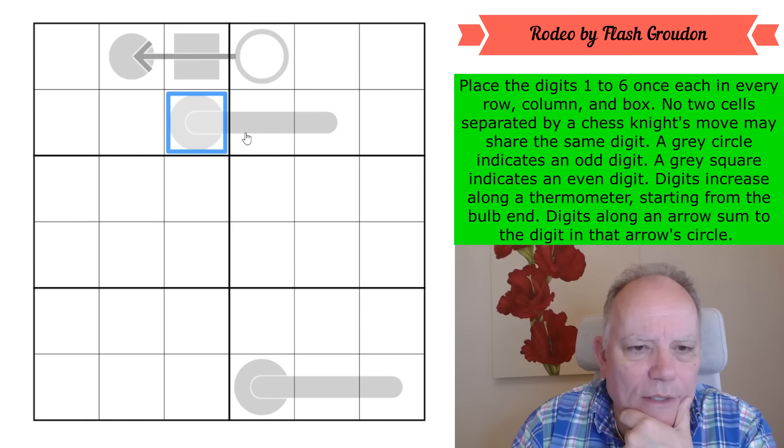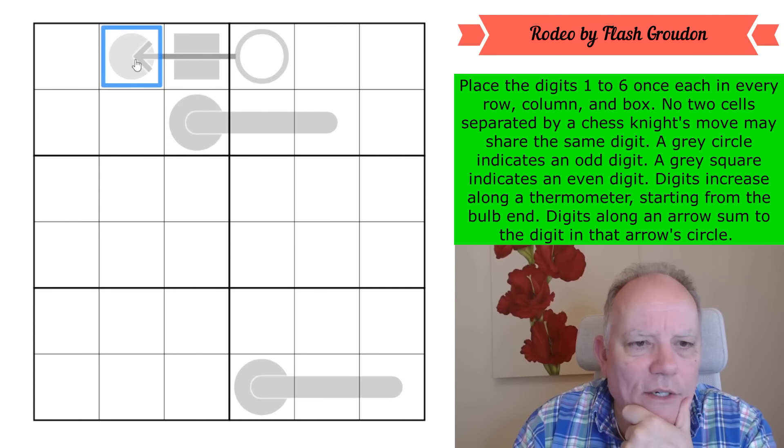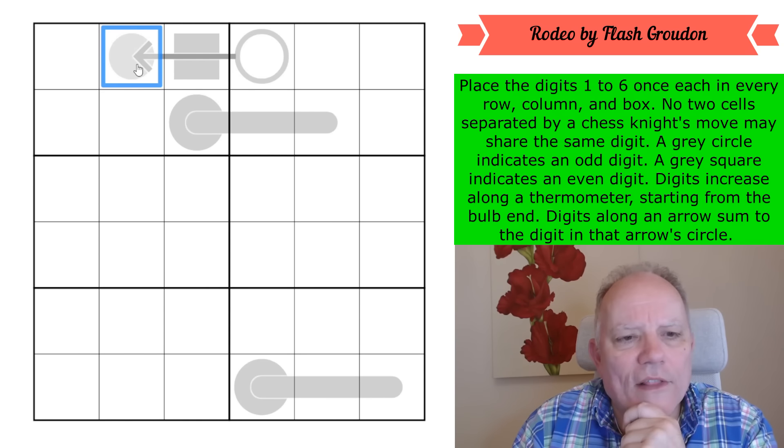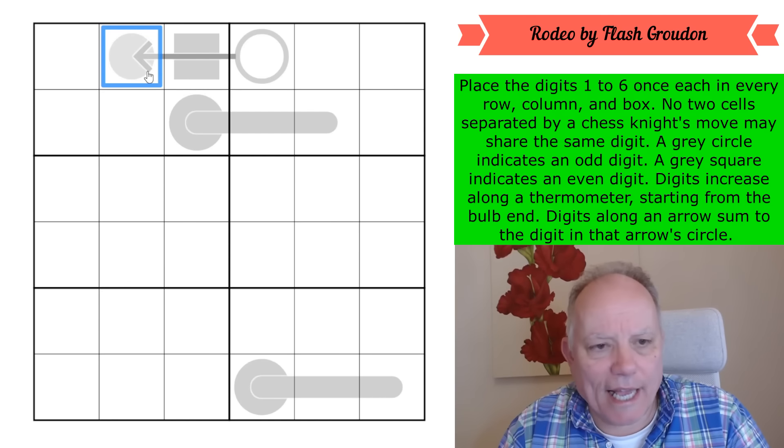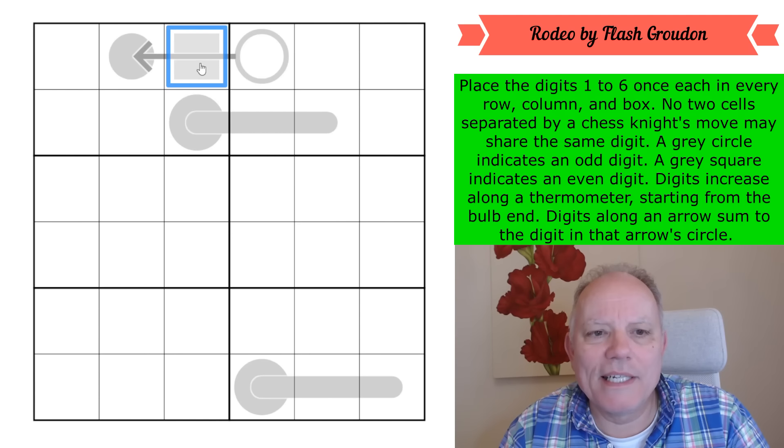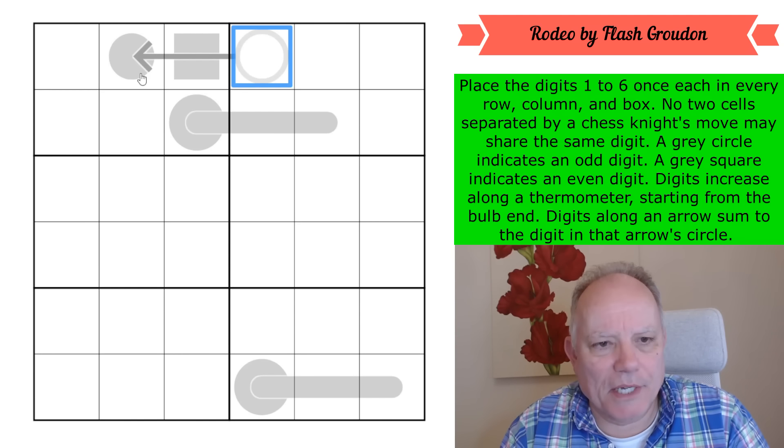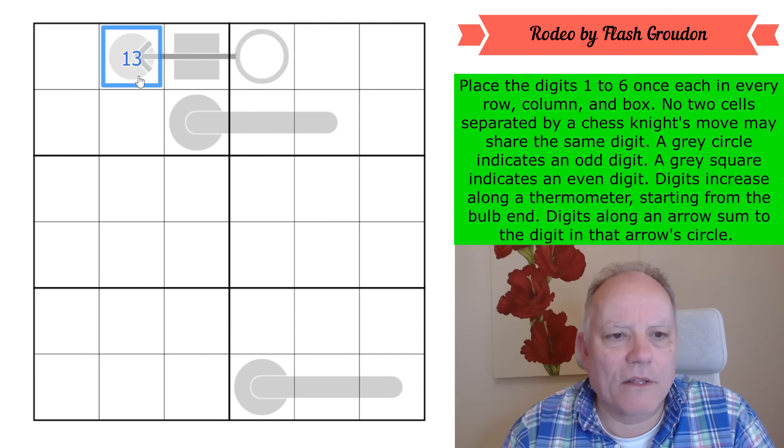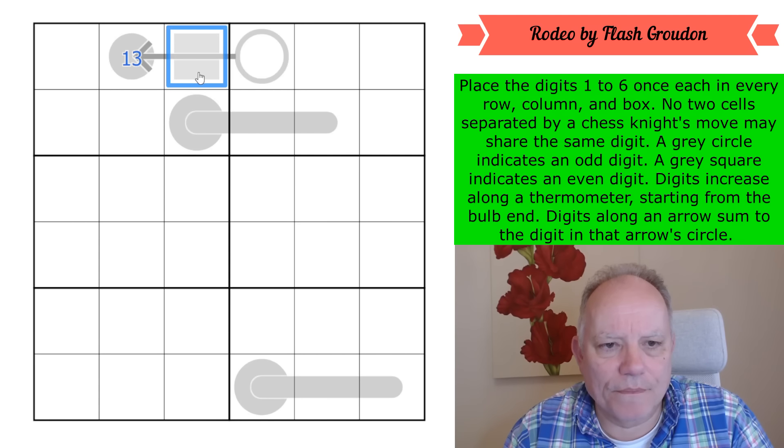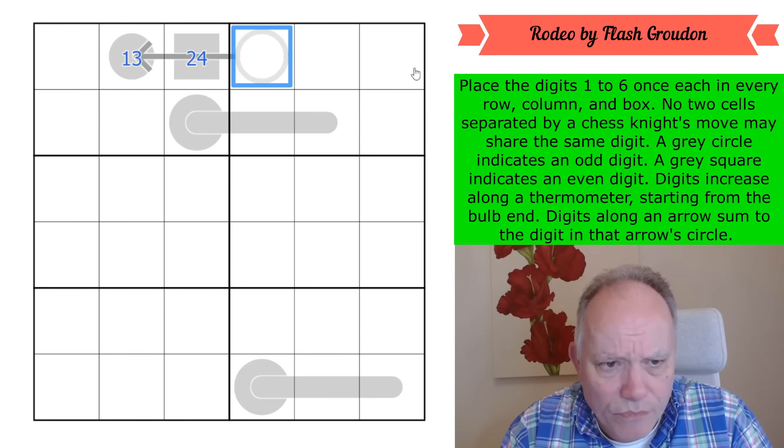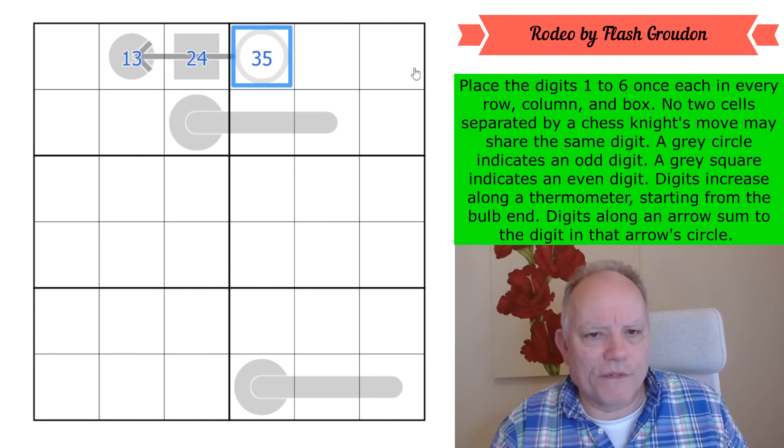I could pencil mark the thermos. Let's look at that cell - this is odd and it cannot be a five because if it was it would add to at least two and make a non-6x6 sudoku digit. So that's one or three and this one is two or four.